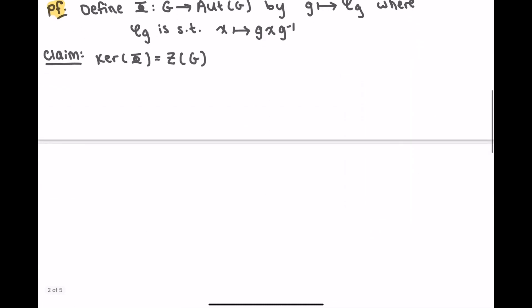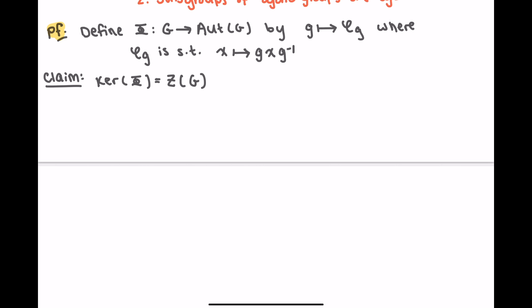How do we do something like this? I think double inclusion is the way to go. I think the easier direction is backwards. So let's show center of G is contained in kernel of phi. Let g in center of G. Then the kernel of capital phi, this is equal to little phi sub g. This is the map that takes x in G and sends it to gxg inverse. I want to show that this is the same as the identity map on the group.